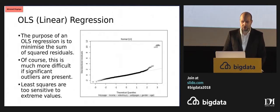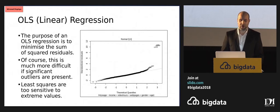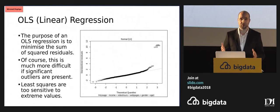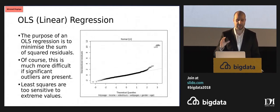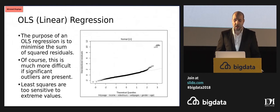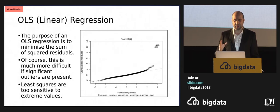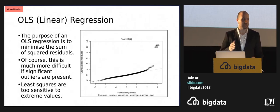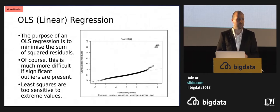In terms of a linear regression, most commonly an Ordinary Least Squares regression, when we run this type of regression we're trying to minimize the sum of the squared residuals — in other words, minimize the distance between our predictions and the actual values. If significant outliers are present, least squares becomes too sensitive to extreme values, and it affects our overall results.